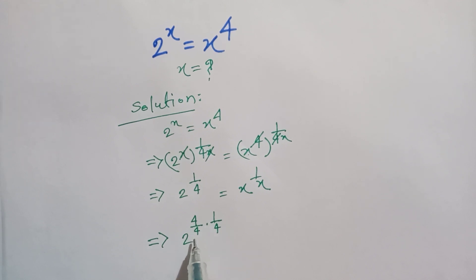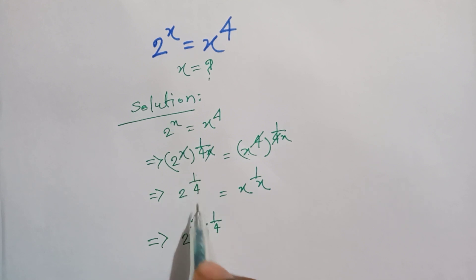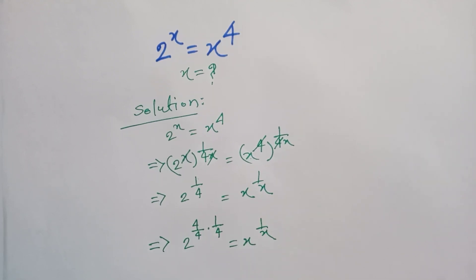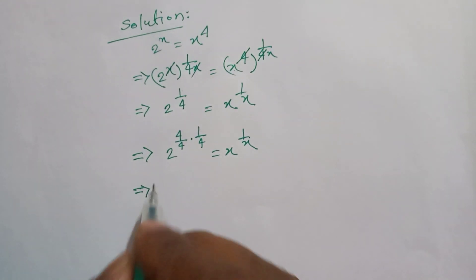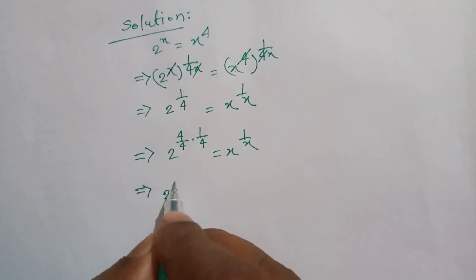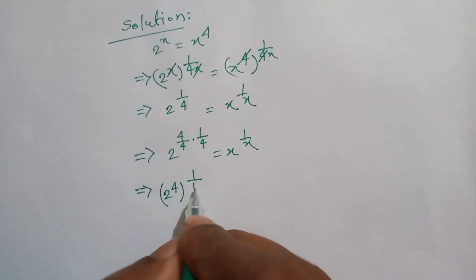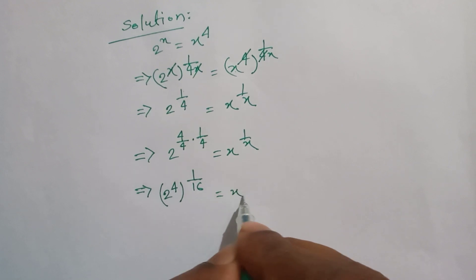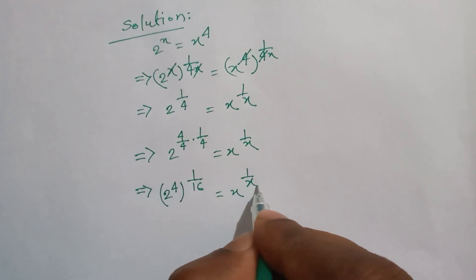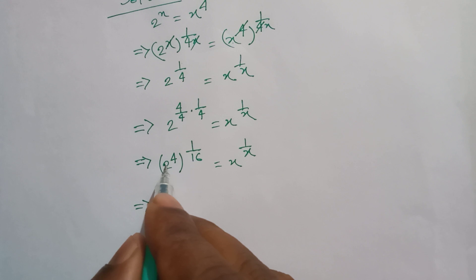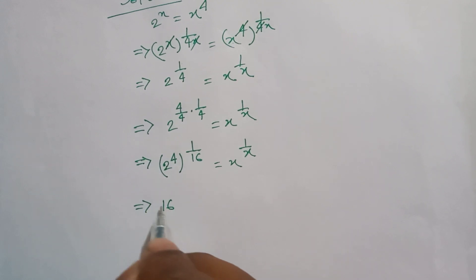Looking at the left side, that 4 and this cancel, so the value is the same as 2 to the power 1 over 4 is equal to x to the power 1 over x. Now it can be written as: 2 to the power 4, all to the power 1 divided by 16, is equal to x to the power 1 divided by 16. And 2 to the power 4 is 16, so we have 16 to the power 1 over 16.